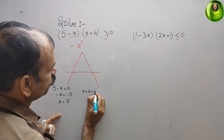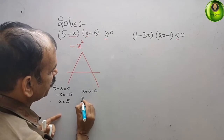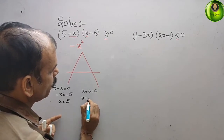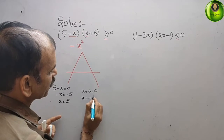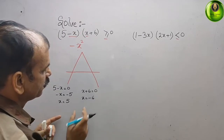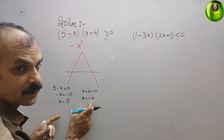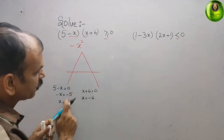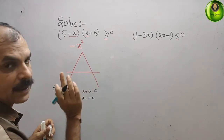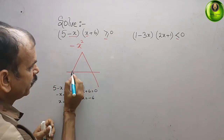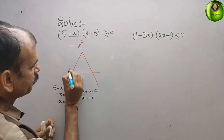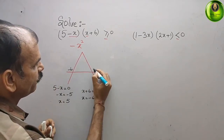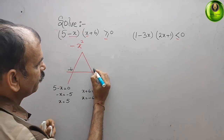For the second factor, x plus 6 equals 0 gives x equals minus 6. Now minus 6 will come on the left side and 5 will come on the right side of the number line. We write minus 6 here and 5 here.